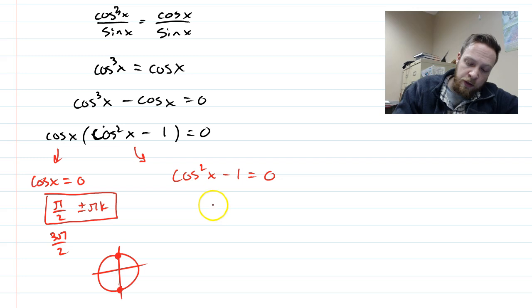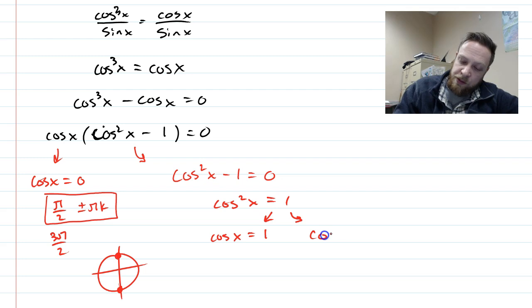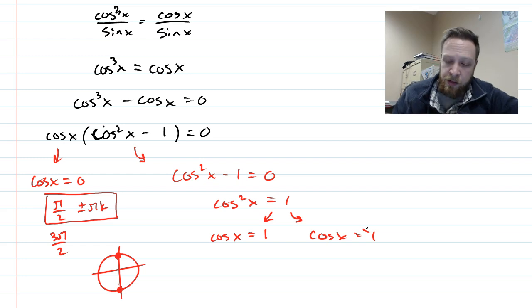Okay? So, over here, on the other side, we're going to add one over. And then when we square root, we're going to have, again, two different answers. Because cosine x can be 1, or cosine x could be negative 1, because I square rooted, you have two possibilities. Cosine of x could be negative 1 or positive 1.